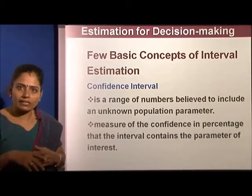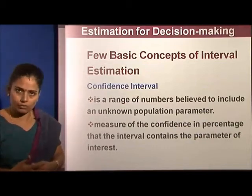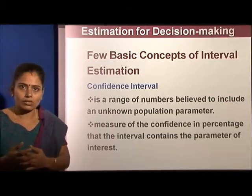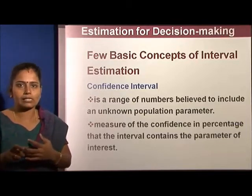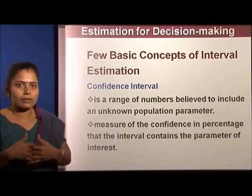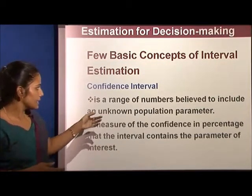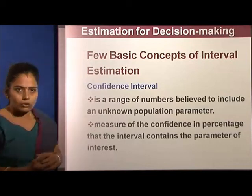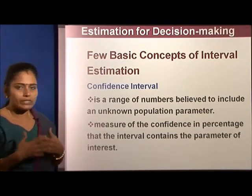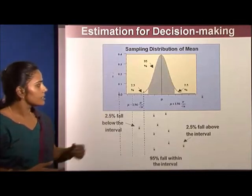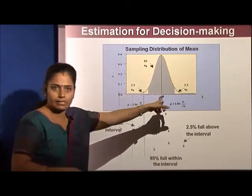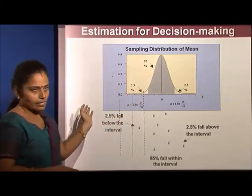The second type is interval estimation, or confidence interval. Instead of one exact value, we say next year's sales will vary between one thousand two hundred and one thousand three hundred crores approximately. That is interval estimation — giving a range in which the probability of the true value occurring is high. It is a range of numbers believed to include an unknown population parameter. For example, a 95% confidence interval means 95% falls inside, with 2.5% on each tail — those tail regions are called the critical region.